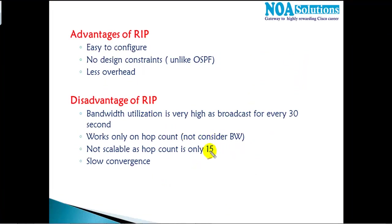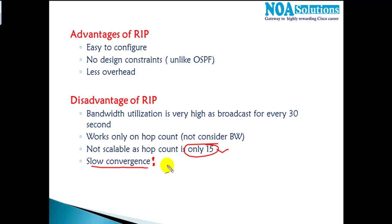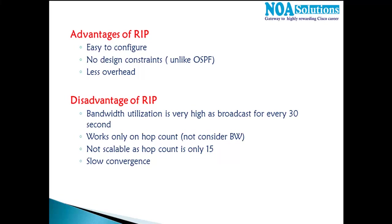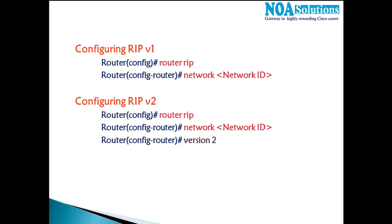RIP is also not scalable — it only supports up to 15 hops, so networks larger than 15 hops cannot use RIP. Additionally, convergence is very slow, taking more than 240 seconds to switch to an alternate route. By comparison, EIGRP takes just 15 seconds and OSPF takes about 40 seconds. This very slow convergence makes RIP largely inapplicable in most modern production networks.